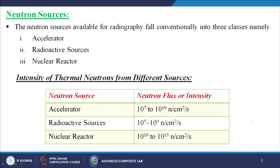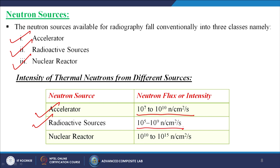Neutron sources include accelerators, radioactive sources, and nuclear reactors. The intensity of thermal neutrons from an accelerator is 10⁷ to 10¹⁰ neutrons per cm² per second. From radioactive sources it is 10⁵ to 10⁹ neutrons per cm² per second. From a nuclear reactor it is 10¹⁰ to 10¹⁵ neutrons per cm² per second.